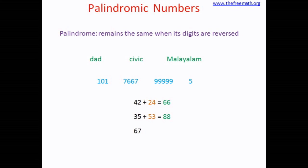If you have 67, what are you going to do? You will flip it. So you get 76. Now add these two numbers. The sum is 143 and it is not a palindrome.